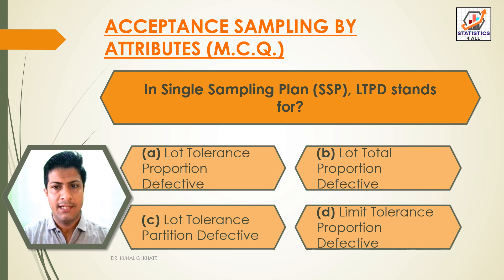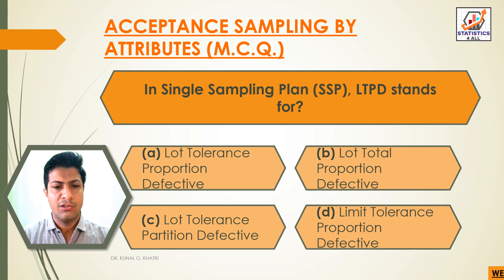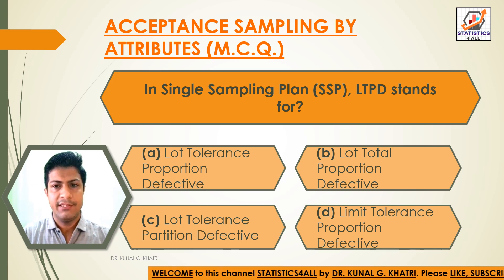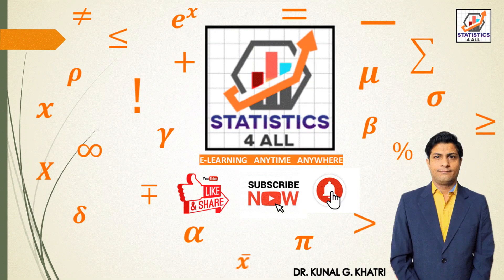Question 19: In a single sampling plan, LTPD stands for — Option A: Lot Tolerance Proportion Defective. Option B: Lot Total Proportion Defective. Option C: Lot Tolerance Partition Defective. Option D: Limit Tolerance Proportion Defective. The answer is Option A — Lot Tolerance Proportion Defective.